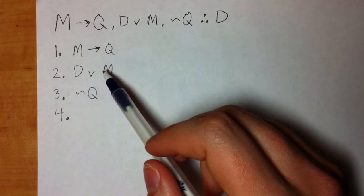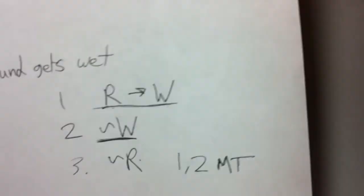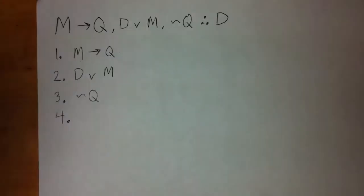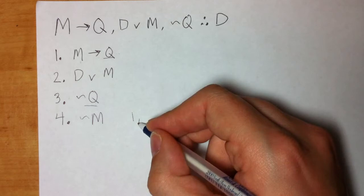Can you see what pattern this presents? If you said modus tollens, you're right. I have an arrow, and I have tilde the consequent. So just like before, when I have tilde the consequent, I write down the tilde of the antecedent, or the tilde of the left side. So on line four, I can write tilde M, because I have that pattern. So that's line one and three. MT, modus tollens.